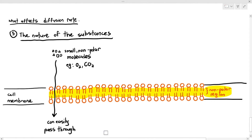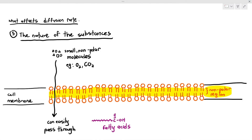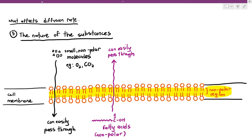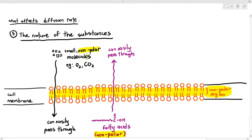Another example of non-polar molecules that can easily pass through the phospholipid bilayer are fatty acids. Because fatty acids themselves are quite non-polar as well, fatty acids can also move across the phospholipid bilayer from an area of higher concentration to lower concentration.